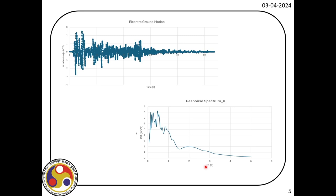Sometimes we use a design response spectrum instead of one for a particular earthquake — that is given in the code — but today we are not doing that. We have this response spectrum in digital format, so for every time period we have the value of the response spectrum. We will apply the 100-30 rule recommended in the code: we have the response along the major direction and then apply a factor of 0.3 in the orthogonal directions.